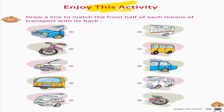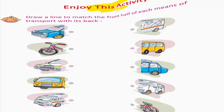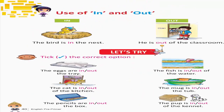Enjoy this activity — Draw a line to match the front half of each means of transport with its back. Use of in and out. In — The bird is in the nest. Out — He is out of the classroom. Let's try — Tick the correct option.